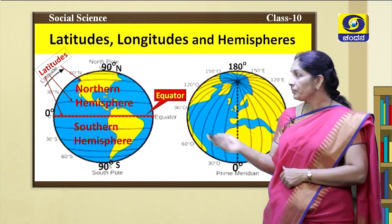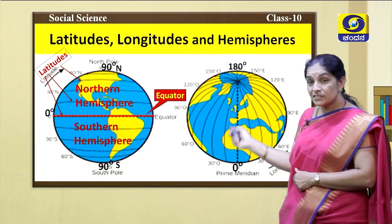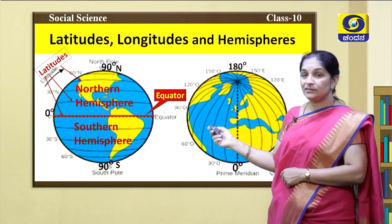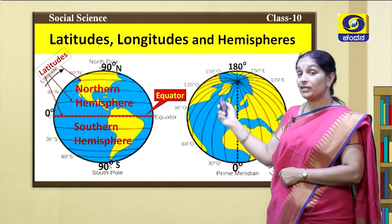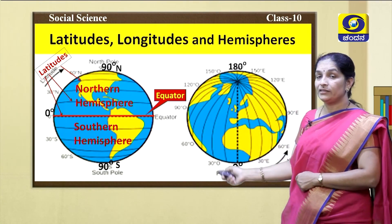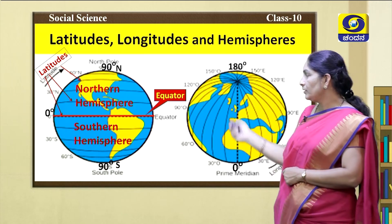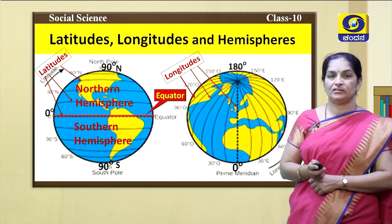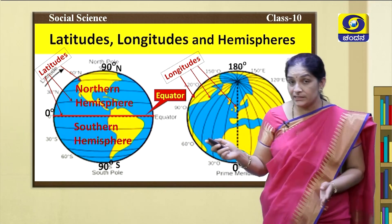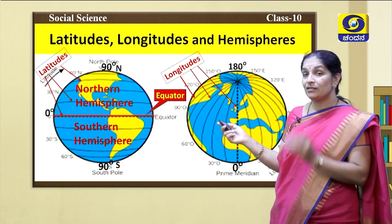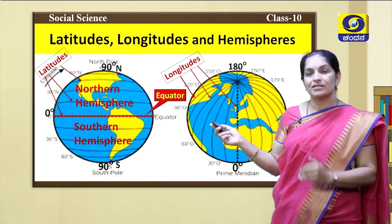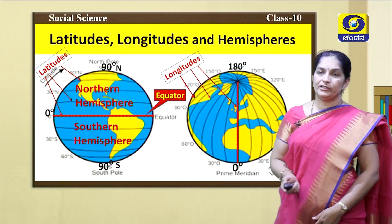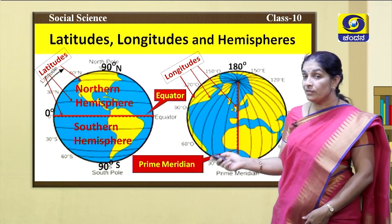Children, look at this picture. In this picture, you are observing the vertical lines. These vertical lines join the north pole and the south pole. These vertical lines are called longitudes. Longitudes are imaginary lines which join the north pole and south pole. The 0 degree longitude is called the prime meridian.